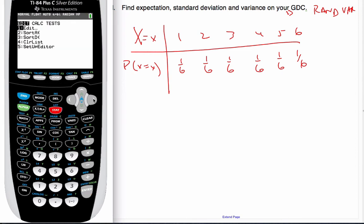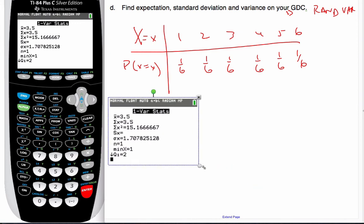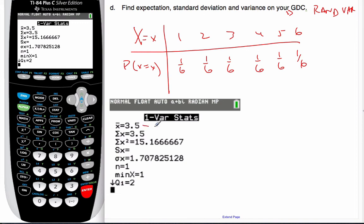then I'm going to go to stat, and I'm going to calculate one variable statistics. And my list is L1, my frequency list is going to be L2. And then I'm going to calculate. And so from here, what I can see is this value is my expectation, which is also equal to the mean. I can also see that right here is the standard deviation, which we calculated as well in the previous example.